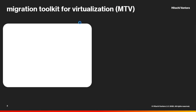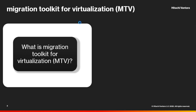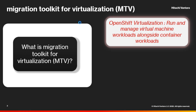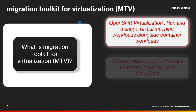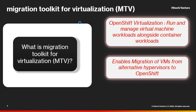So what is MTV and why would you use it? As customers look to re-platform their virtual machines, one of the options people are considering is OpenShift virtualization. This provides an excellent option to run both virtual machine workloads alongside container workloads. The Migration Toolkit for Virtualization, MTV from Red Hat, enables migration of multiple VMs from other hypervisors to OpenShift. It is available as a no-charge add-on to Red Hat OpenShift.